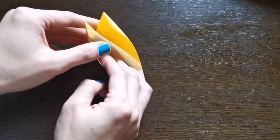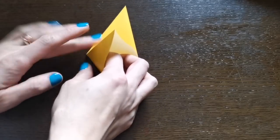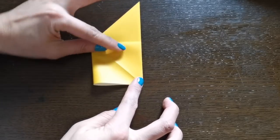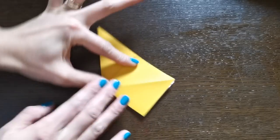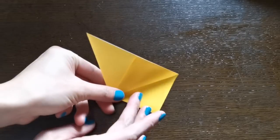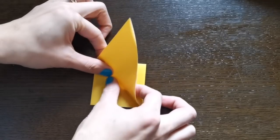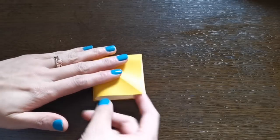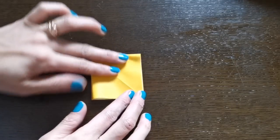Now you're going to open one of the pockets and press it down to be a square. Then you turn around and open another triangle to be a square again by pushing it down.